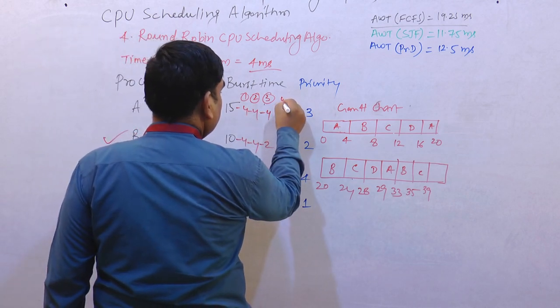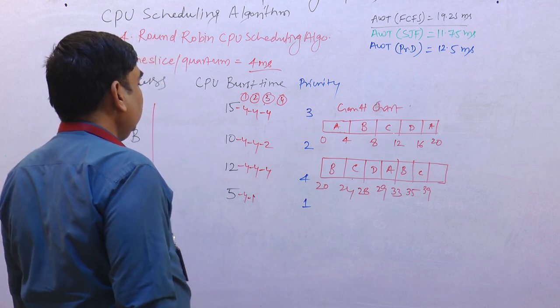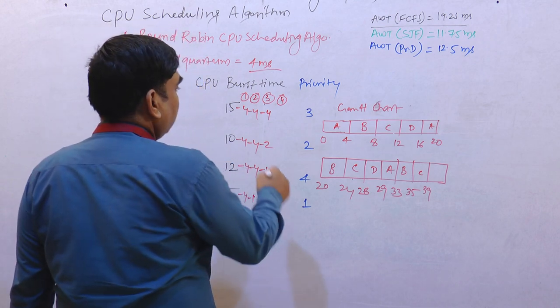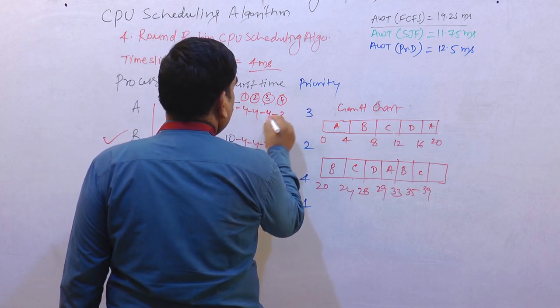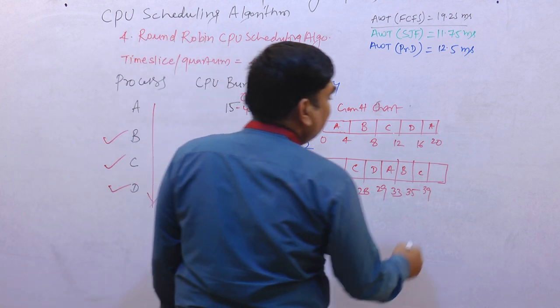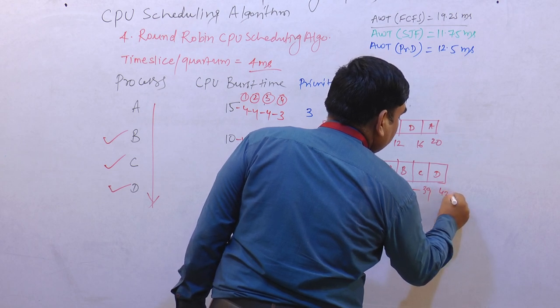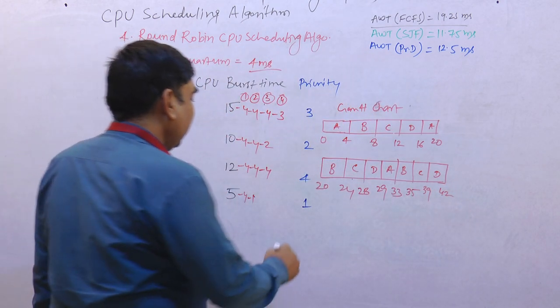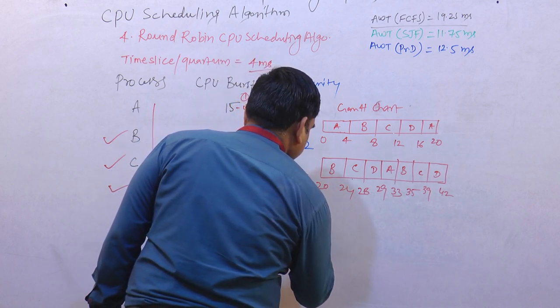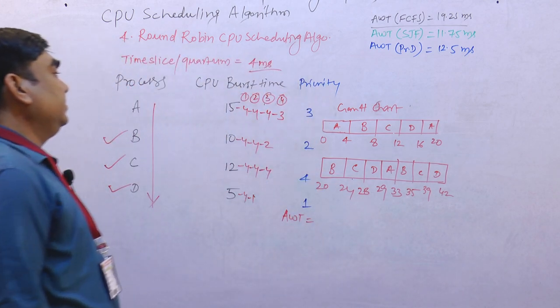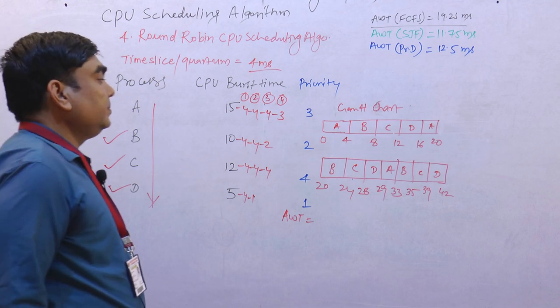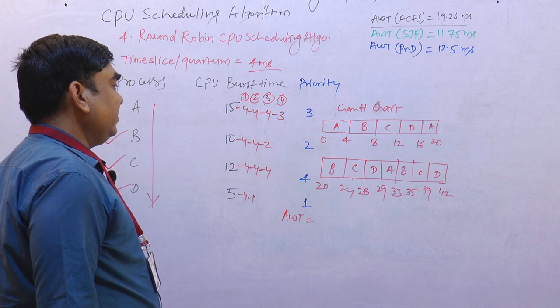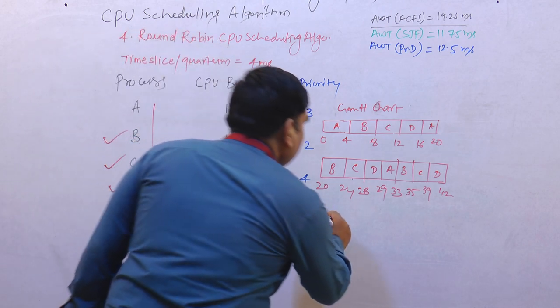In round four, there is only one process - D - with 3 milliseconds remaining. Now we will calculate the average waiting time. So we will calculate the waiting time for all the processes.